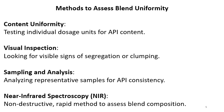Methods to assess blend uniformity include: content uniformity testing, visual inspection, sampling and analysis, and Near Infrared Spectroscopy (NIR). Content uniformity involves testing individual dosage units for API content. Visual inspection involves looking for visual signs of segregation or clumping. Sampling and analysis involves analyzing representative samples for API consistency — this is called BU sampling and BU analysis. NIR is a non-destructive, rapid method to assess blend composition.